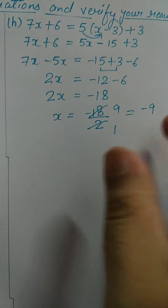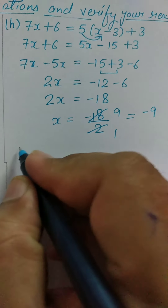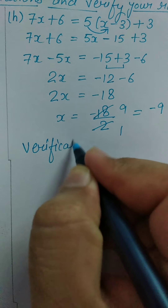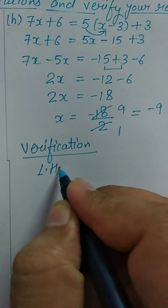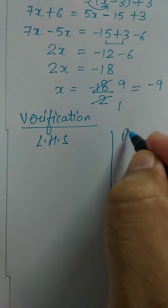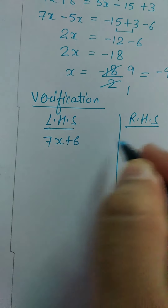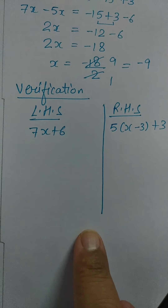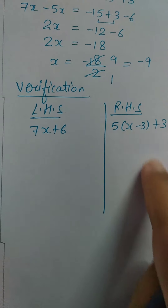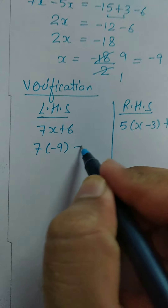Now you have to verify that your answer is correct. For this, do the verification. Make 2 columns — one for LHS and one for RHS. In LHS, you have 7X plus 6. In RHS, you have 5(X minus 3) plus 3. First solve the LHS, then come to the RHS. Put the value of X: 7 times minus 9 plus 6.